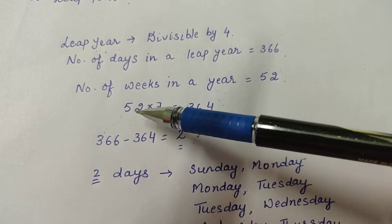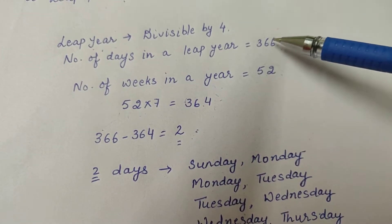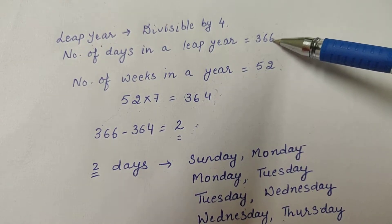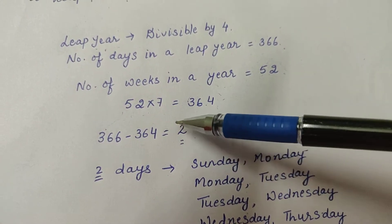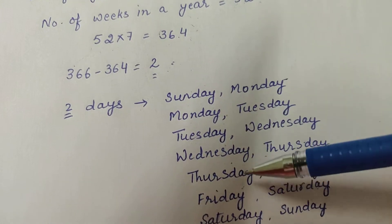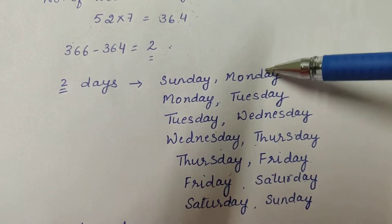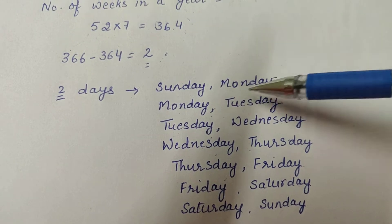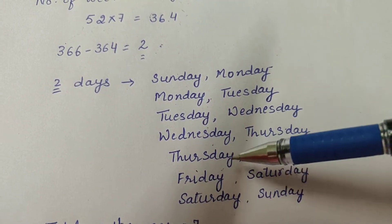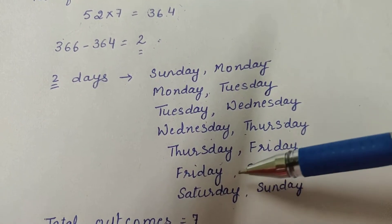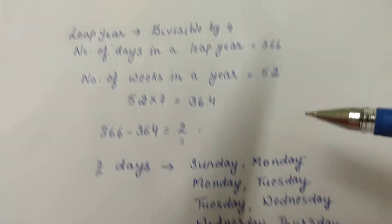Because there are 52 complete weeks in a year — 52 weeks means 364 days — and a leap year has 366 days, the remaining two days can be any of these seven possible combinations: Sunday–Monday, Monday–Tuesday, Tuesday–Wednesday, Wednesday–Thursday, Thursday–Friday, Friday–Saturday, or Saturday–Sunday.